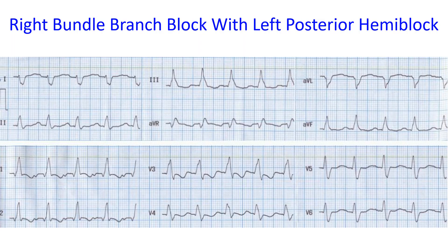This is a bifascicular block — right bundle branch block with a block in the posterior fascicle. The PR interval is almost full. If the PR interval lengthens a little more, it will become trifascicular block, very near to a complete AV block. When they develop complete AV block, since the fascicles are blocked, the subsidiary focus will be from the lower part of the ventricle, which will have a low rate. So if this bifascicular block progresses to trifascicular block and complete AV block, the prognosis will be poor and there is every chance of Stokes-Adams attacks occurring.